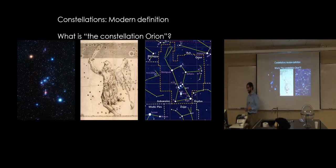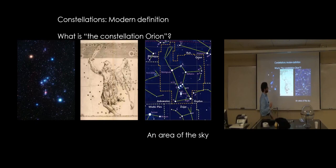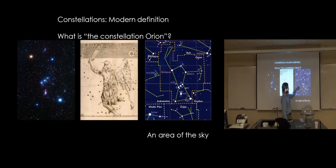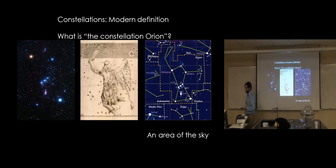The modern definition of a constellation is a particular area of the sky with a set of fixed boundaries. Those fixed boundaries were picked in conferences that finished in 1930, so they're basically completely arbitrary. What they tried to do is preserve the historical and cultural meanings. Orion is now officially everything inside of the yellow dotted line. The stick figure and the picture associated with it — those are called asterisms. Constellation now means an area of the sky.